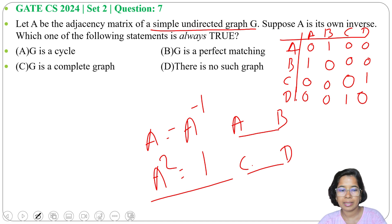Option A: G is a cycle. Is it a cycle? No. So option A is wrong. Option B: G is a perfect matching. Yes, this is true.